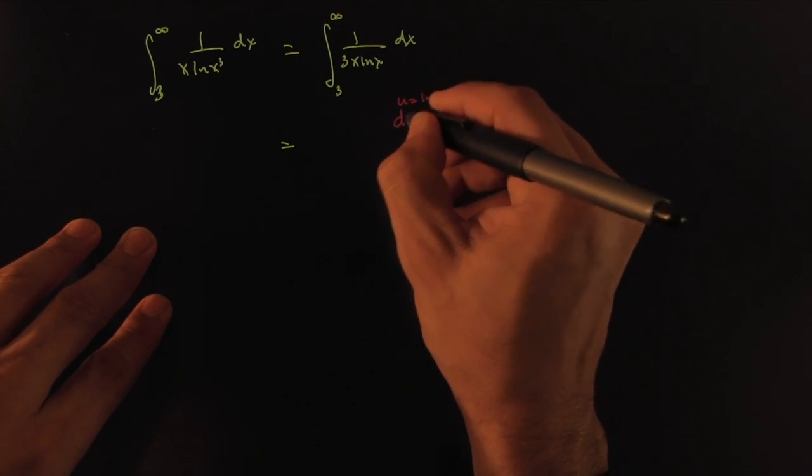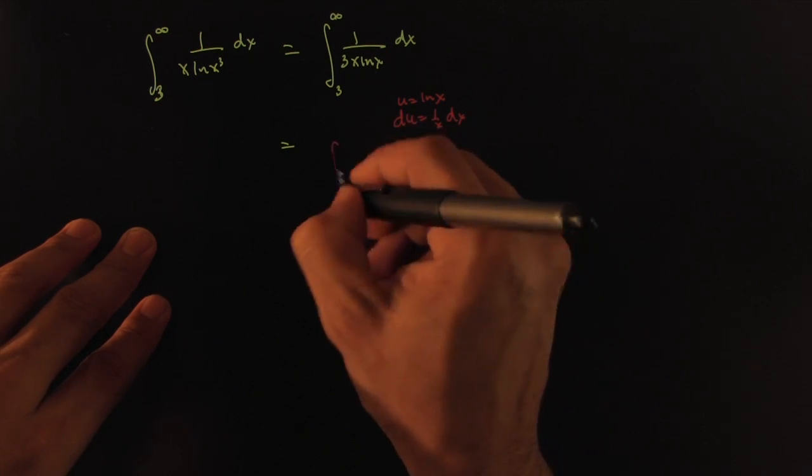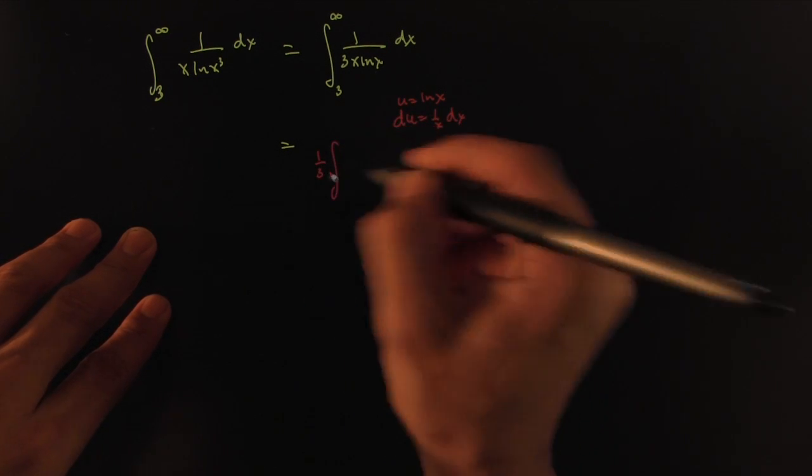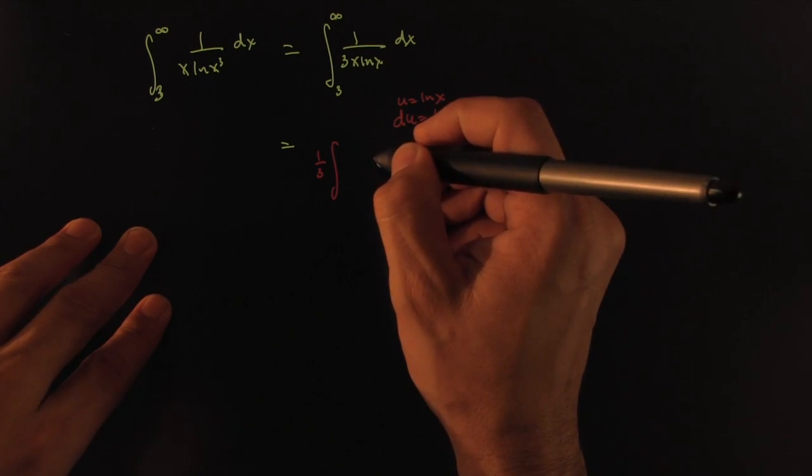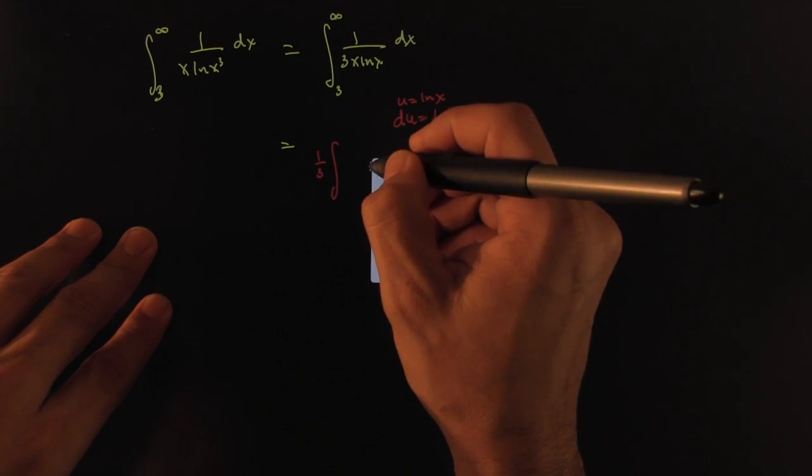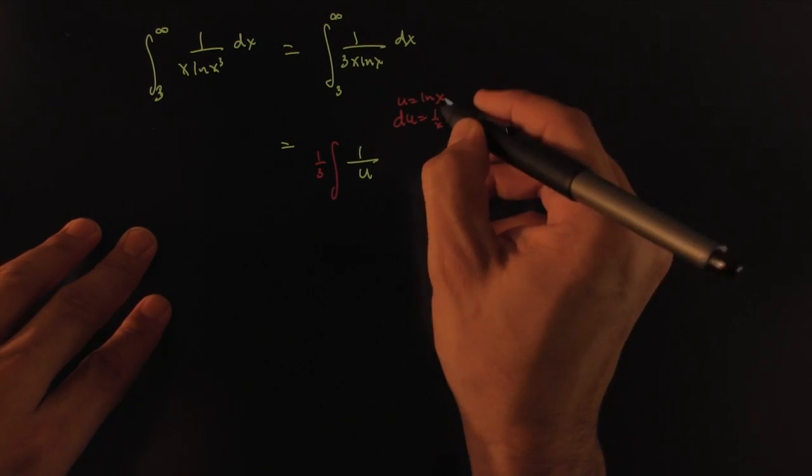This of course you can make a u-substitution. We'll make u be equal to ln(x). Then your differential would be 1 over x dx. So this would be the integral of 1 over 3 here.